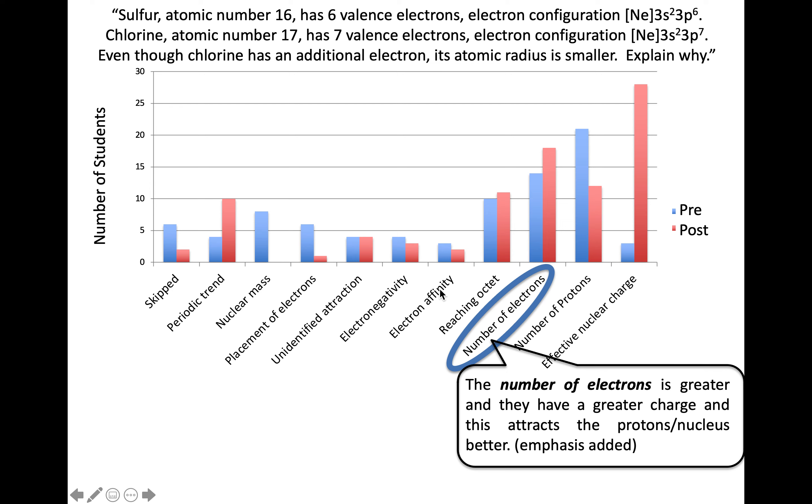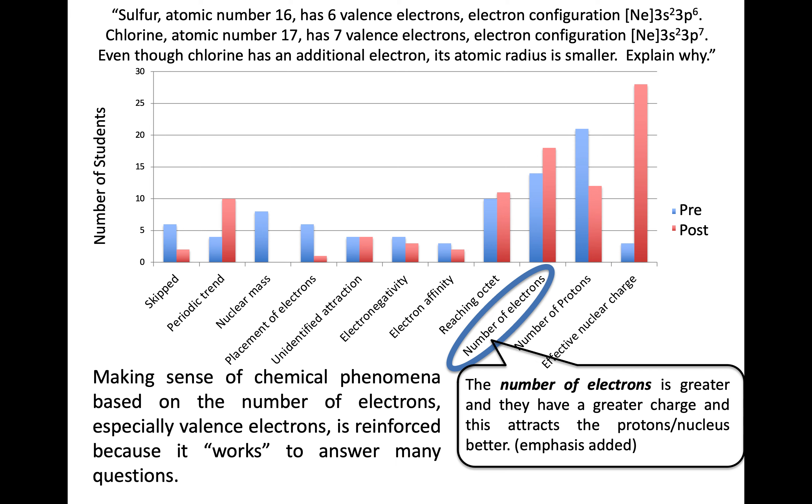Somewhat in between those categories were descriptions involving the electrons themselves, where the number of electrons was crucial. For example, students reasoned that a greater number of electrons means greater charge, which attracts the nucleus better. Instead of thinking about charge in the nucleus, it's about the electrons. I find this common because within chapter 7, making sense of chemical phenomena based on electron number and configuration works many times. Because it works, it gets reinforced. Students aren't seeking a different explanation or thinking about protons. They find it sort of worked, so looking at electrons seems sufficient.